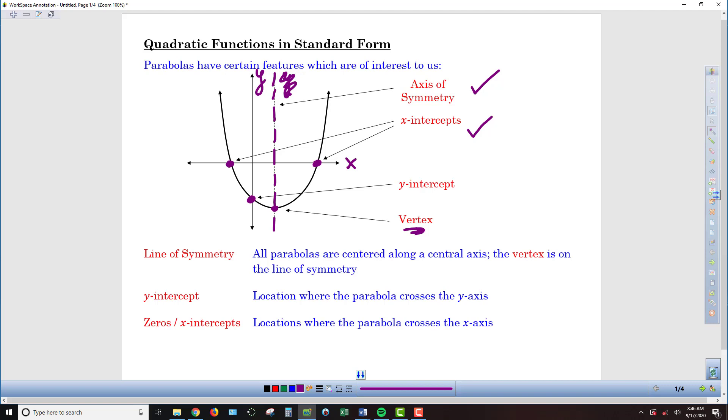Depending on how the equation is written, we can identify some of these features more or less easily. We've studied vertex form where we could get the vertex pretty easily, but all the other features were trickier to obtain. Today we're going to look at standard form of a quadratic function and see how we can pull out the information necessary to sketch our graph.